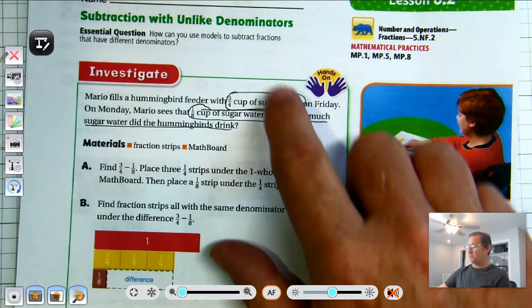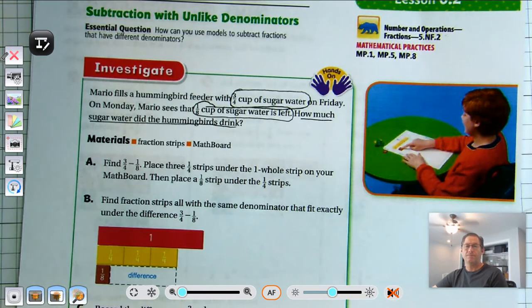So we see that he started with three-fourths cup of sugar water and he only has one-eighth cup left. So that implies that we're subtracting. We need to find how much disappeared from the sugar water.